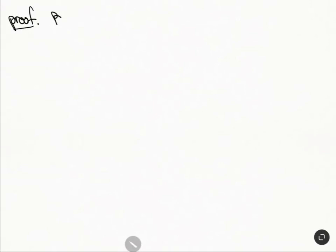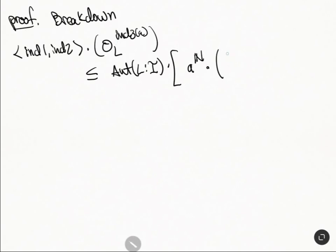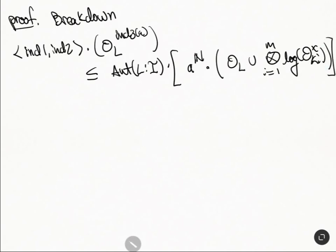I'm going to start to prove the inequality. We're going to break down n1, n2 dotted with — or acting on — OL n3. The two easiest things: first, this is contained in LI by definition of those indeterminacies. Second, we have the upper bound for this indeterminacy, so this is OL union the tensor product, i equals 1 up to m, of log OKi cross.